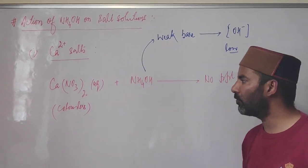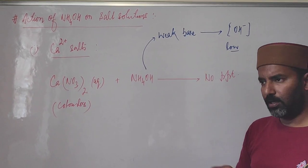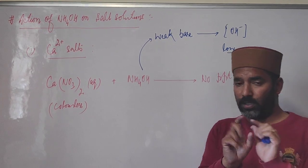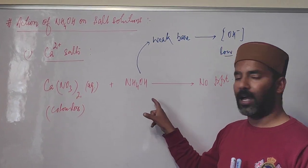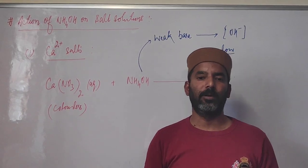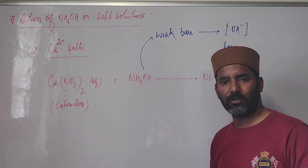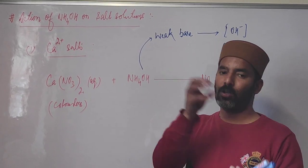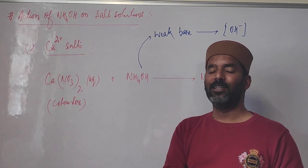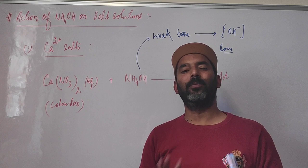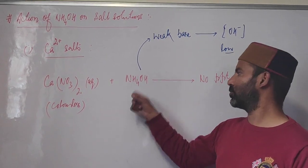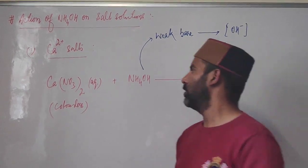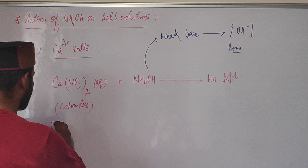Suppose two unlabeled test tubes contain sodium hydroxide and ammonium hydroxide respectively. To distinguish them, take a calcium salt solution and add each reagent. If there is a precipitate, that test tube contains sodium hydroxide; if there is no precipitate, it contains ammonium hydroxide. This method can be used to distinguish sodium hydroxide from ammonium hydroxide. Next, we discuss the action of ammonium hydroxide on ferrous salts.